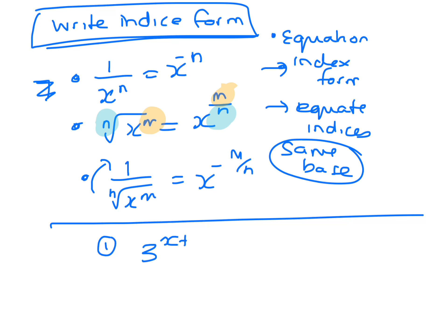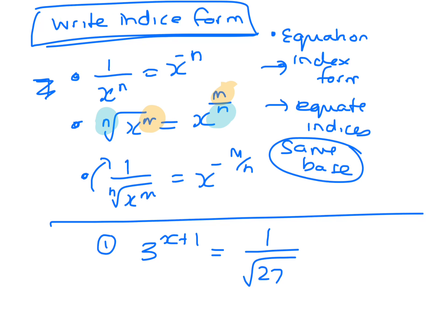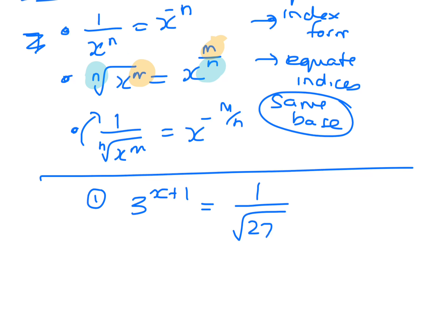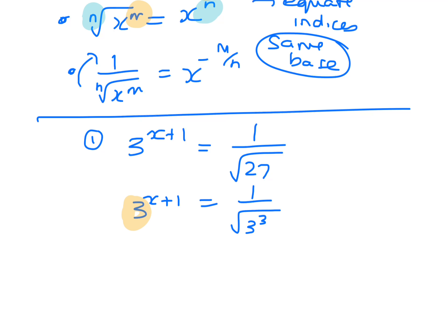Let's say we have 3 to the x plus 1 equals 1 over the square root of 27, and we're trying to find what x is. So 3 to the x plus 1, so that's fine, that's got written as a base 3, so we're all good there. This one here we can put as the square root of 3 to the 3.